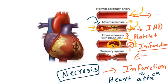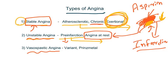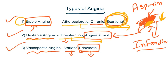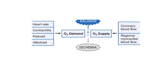The last type is vasospastic angina. Look at this diagram — sometimes the coronary blood vessels undergo a spasm, a sudden contraction. Because of this sudden contraction, blood supply is reduced, again resulting in ischemia and then angina. This is also known as variant angina or Prinzmetal angina, named after the scientist who described vasospastic angina.